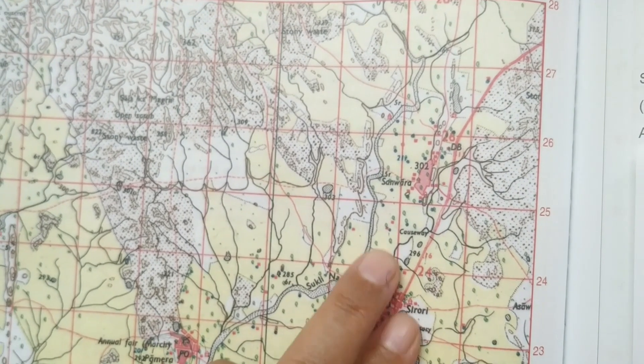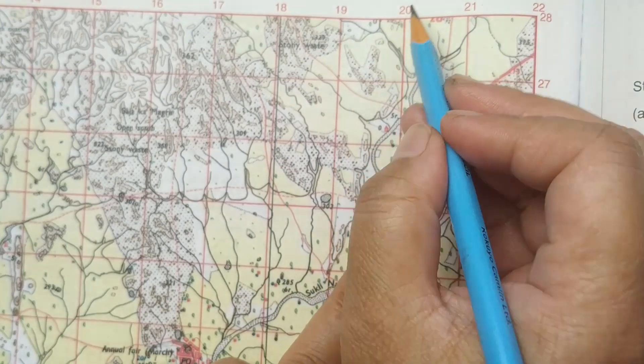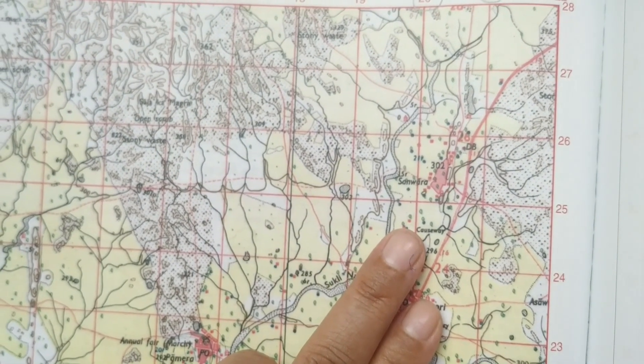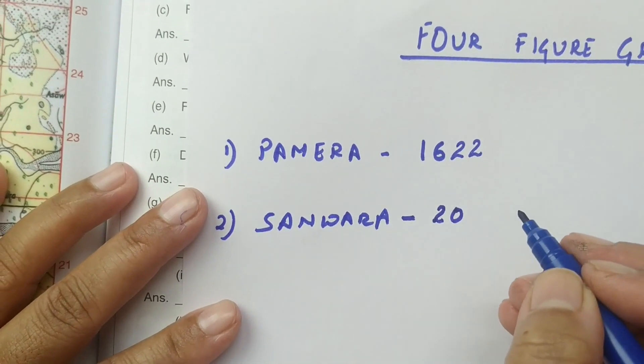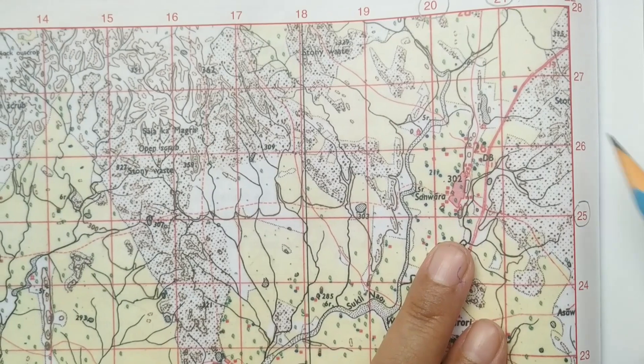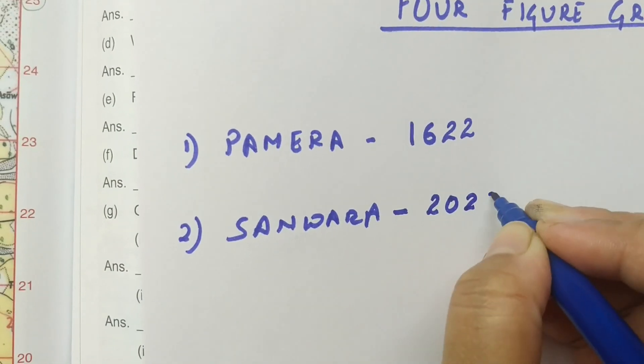To be more clear we will do one more. Next we will take Sanwara. Sanwara comes on Eastings between 20 and 21, so our Easting answer is 20. Now the Northings: Sanwara comes in between 25 and 26 — apply the same rule, write the first number, 25. So the four figure grid for Sanwara is 20, 25. Four figure grid is very simple. Only thing is you have to remember in which grid number it comes, and always write the first number — first go with the Easting, then go with the Northing.